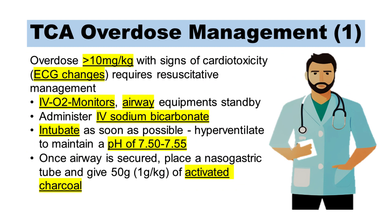Management of TCA overdose. Overdose of TCA greater than 10 milligrams per kilogram with signs of ECG changes requires resuscitative management. Secure intravenous access, administer oxygen, and attach monitoring equipment. Patients need to be managed in a monitored area equipped for airway management. Administer the antidote — intravenous sodium bicarbonate. Intubate as soon as possible if indicated, and hyperventilate to maintain a pH of 7.50 to 7.55. Once the airway is secure, place a nasogastric tube and give 50 grams of activated charcoal.